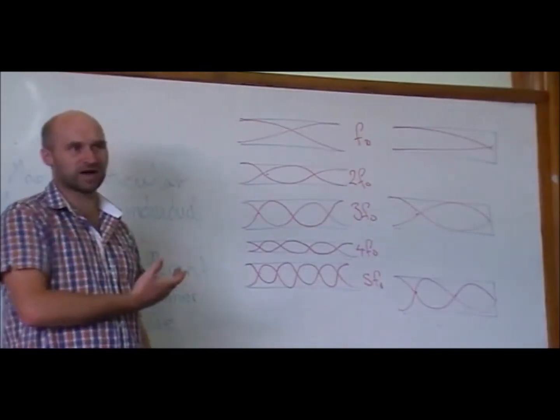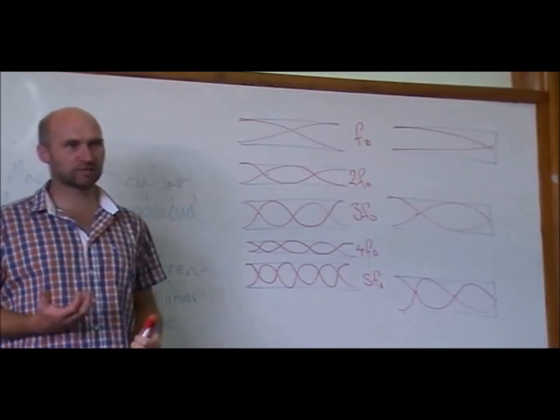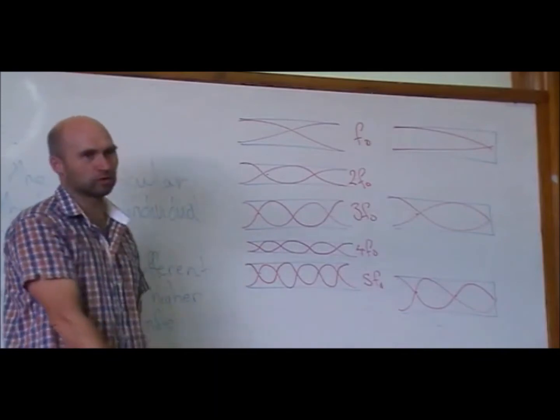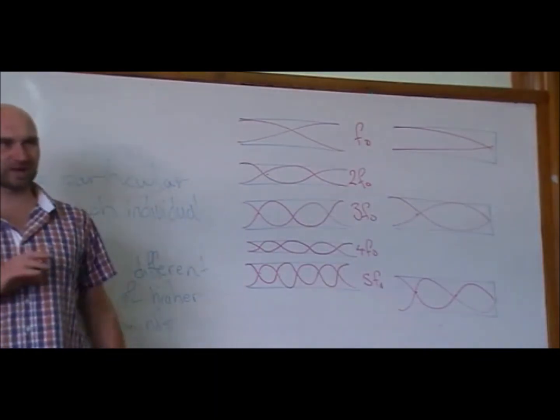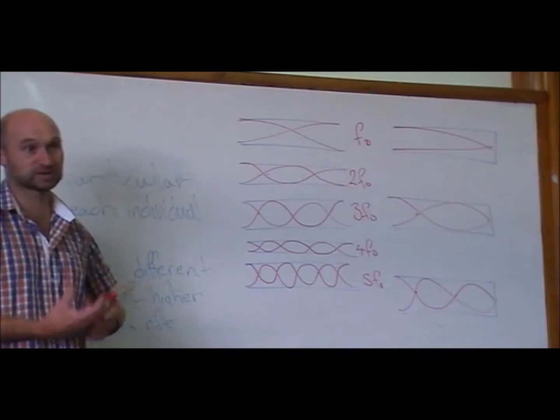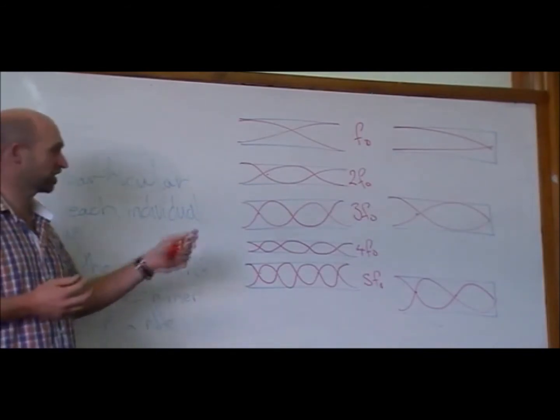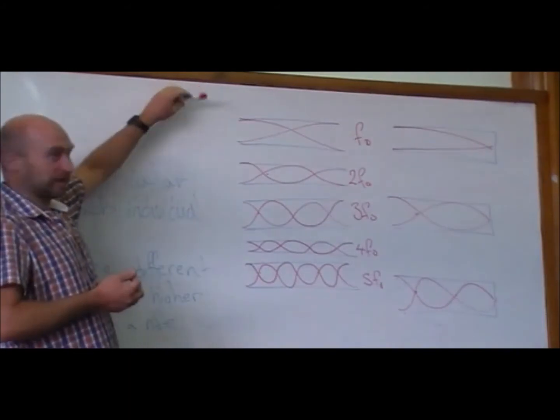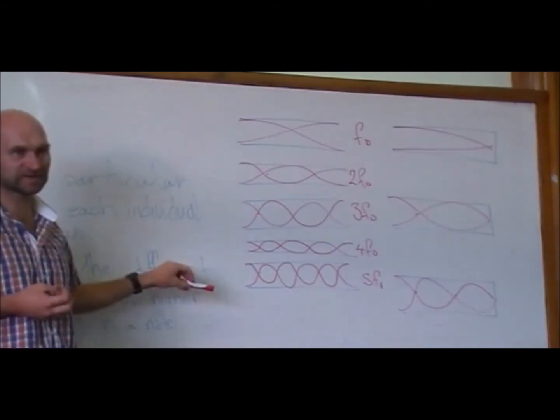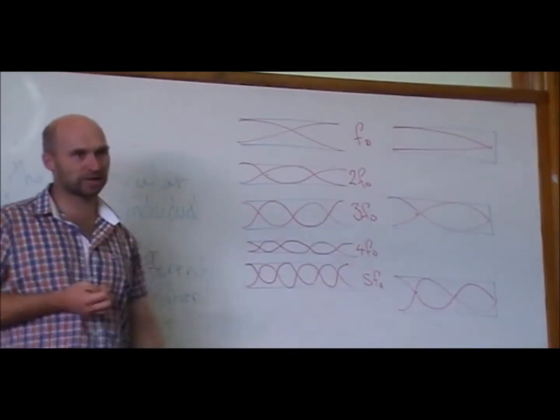So that's a really easy way of understanding what timbre is. Obviously, there's a whole lot more to it about the design of instruments and physically what their structure looks like, what they're made of, and how those different elements resonate. It changes how they sound, but on a really simple level, we can see that an open pipe and a closed pipe playing the same note are going to sound different.